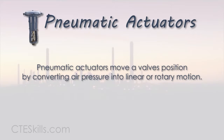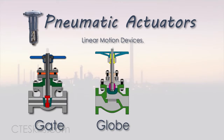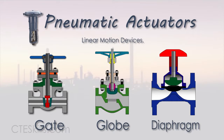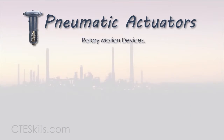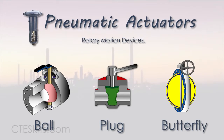Pneumatic actuators move a valve's position by converting air pressure into linear or rotary motion. Linear motion devices open and close valves such as gate, globe, diaphragm, and others with a sliding stem to control the position of the flow control element. Rotary motion typically operates quarter-turn type valves such as ball, plug, and butterfly.